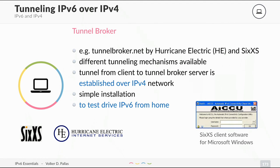The third option, TunnelBroker, is not really for production use — it's just for trying IPv6 at home if you don't have IPv6 connectivity from your ISP. There are two main providers: TunnelBroker.net, run by Hurricane Electric, and 6XS. They have different tunneling mechanisms available and can punch through most firewalls. A tunnel from the client to the TunnelBroker server is established over the existing IPv4 network, and IPv6 can then be exchanged over it. Installation is very simple, with clients for all major operating systems. Check out 6XS and Hurricane Electric if you like.